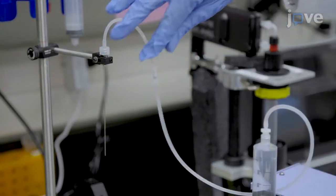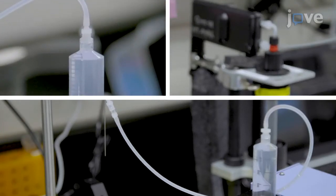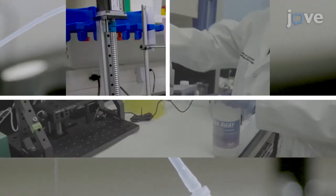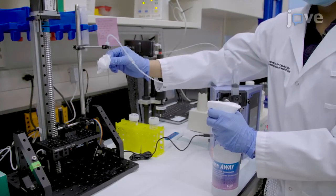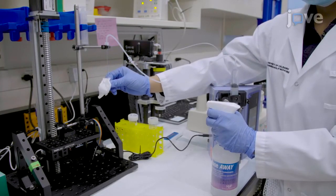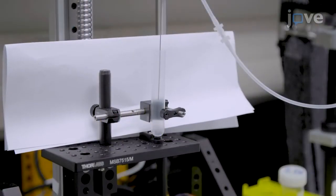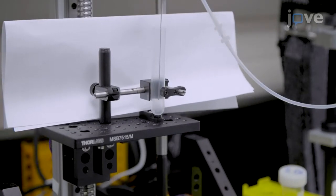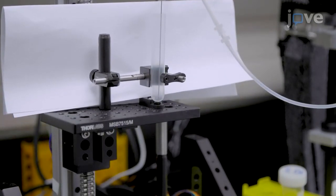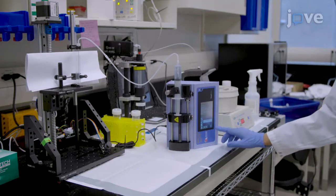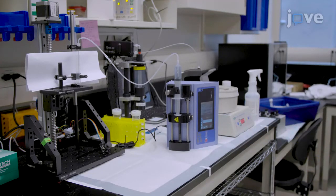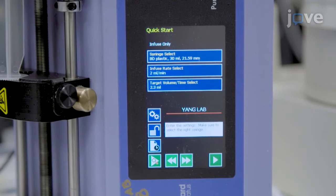Make sure that there are no air bubbles in the syringe, tubing, or needle, and wipe the tip of the needle to remove any residual solution. Move the motorized stage up such that the tip of the needle touches the center of the tube at the bottom. Set the syringe pump to a flow rate of 2ml per minute for a volume of 2.3ml.